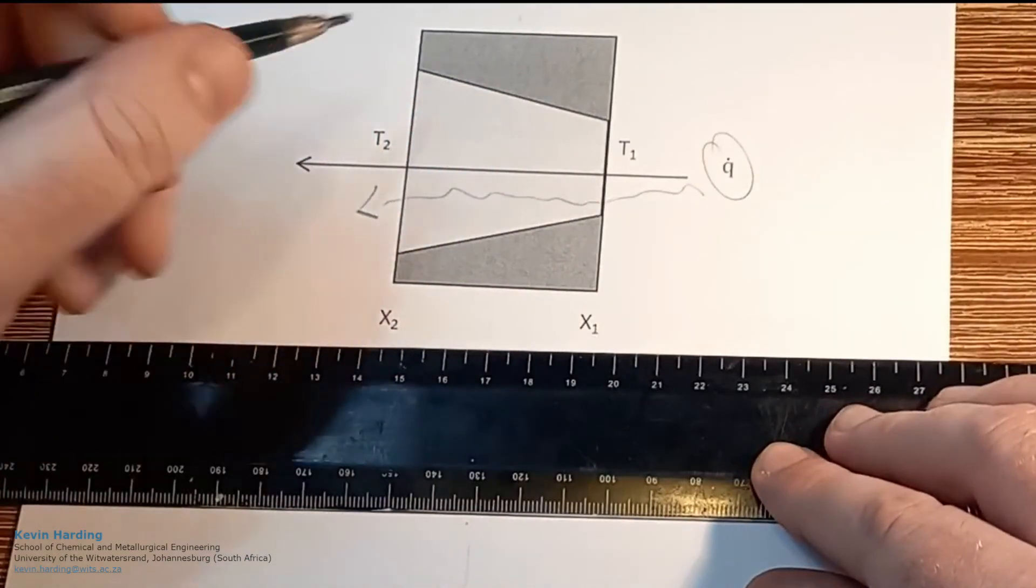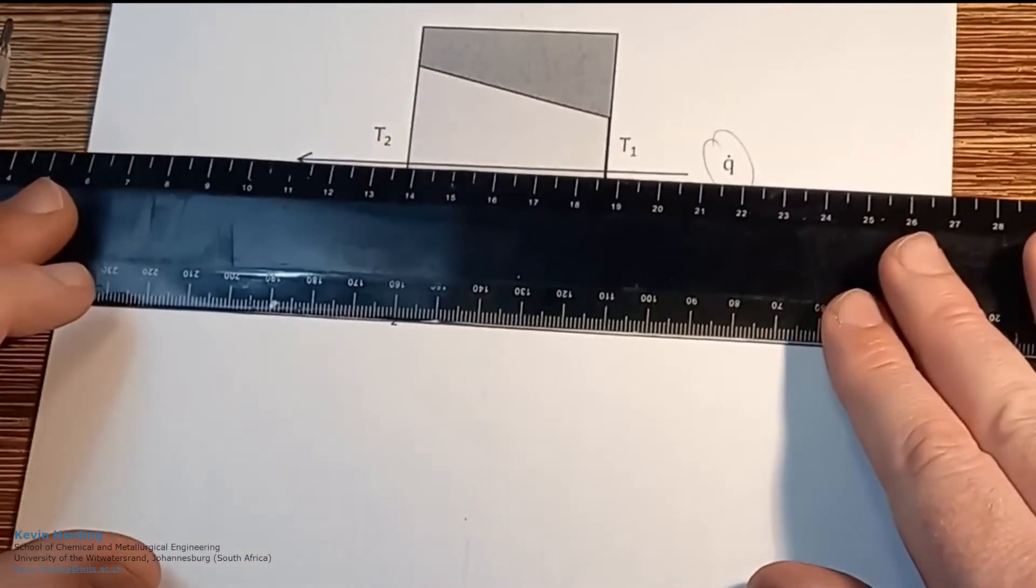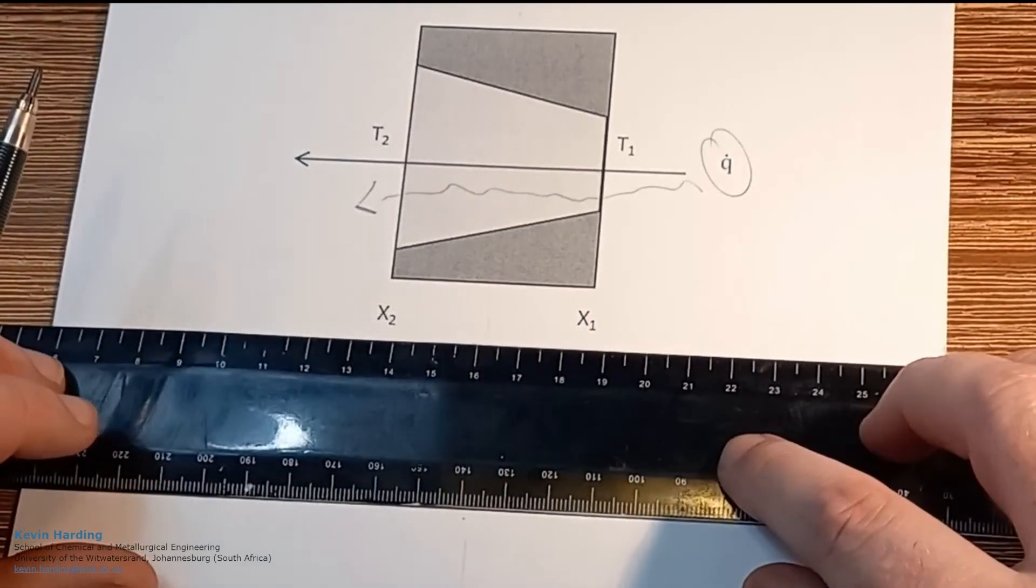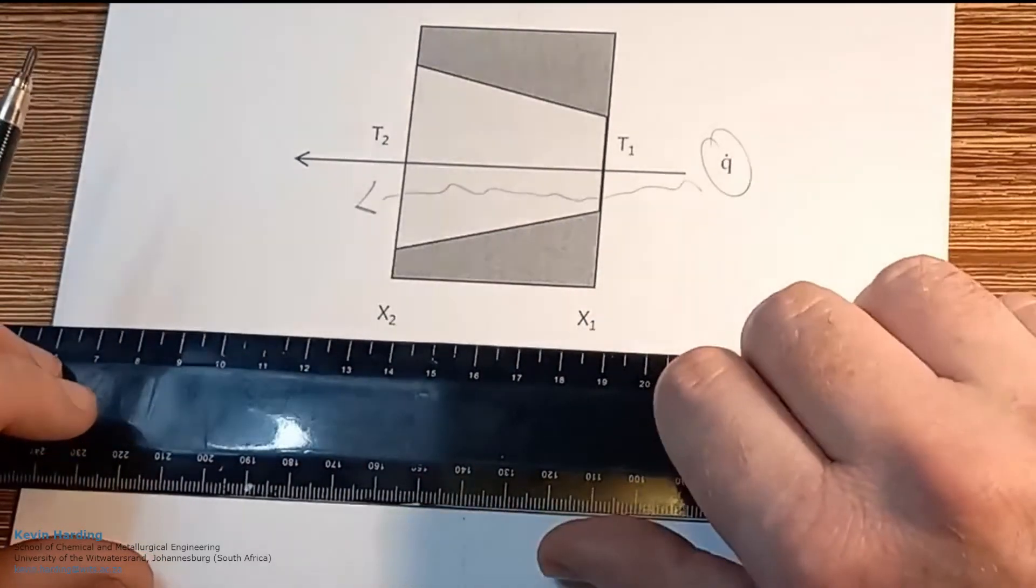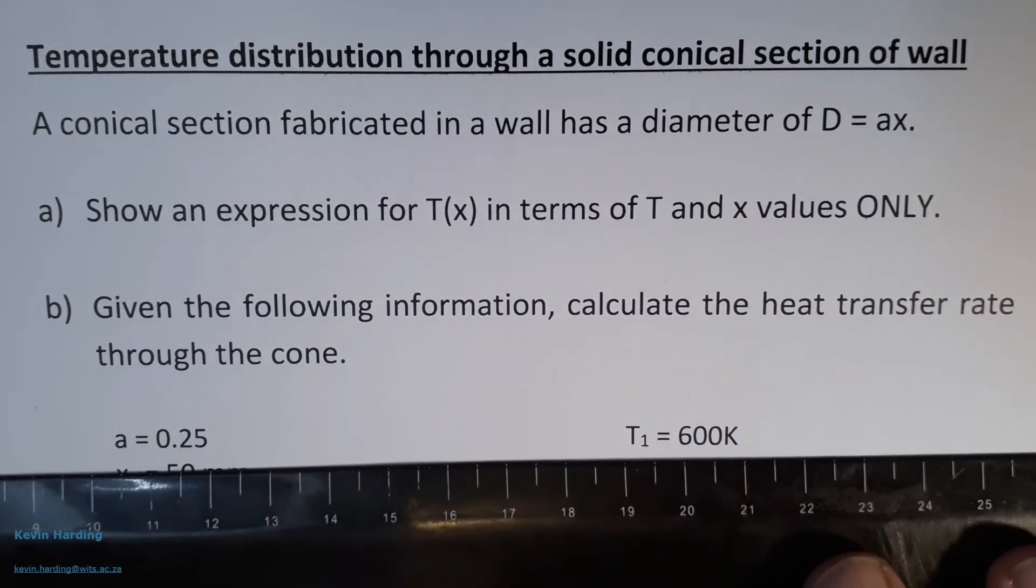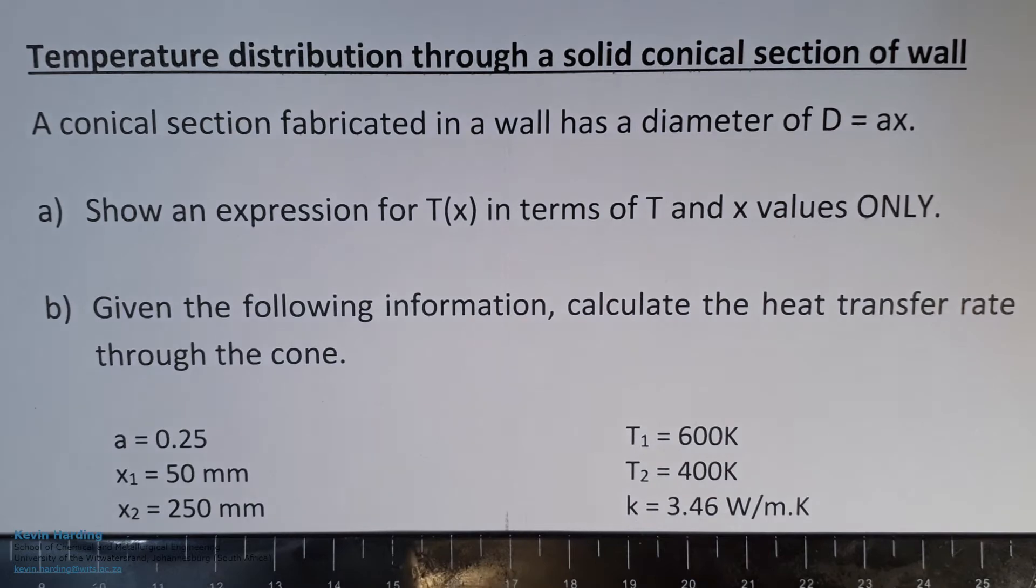Heat flows through it with temperature one on the right and temperature two on the left, with x1 and x2 on the right and the left respectively. Further down in the question they give us values for a, t1, x1, t2, x2, and k.